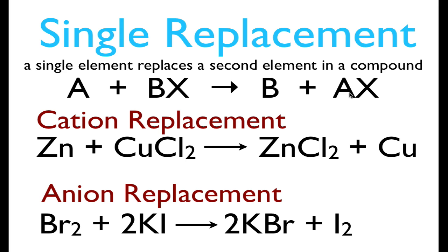The easiest way to recognize a single replacement reaction is if you have a single element and a compound on both sides of your chemical equation. We have A and BX on the reactant side, and then on our product side we also have a single element and a compound — so on each side we have a single element and a compound.